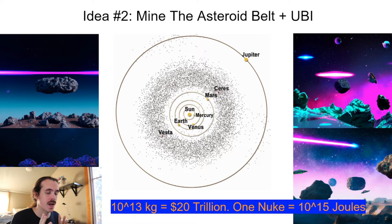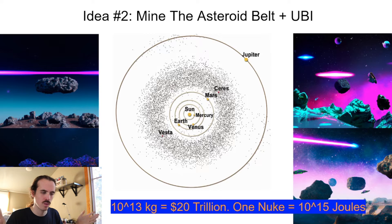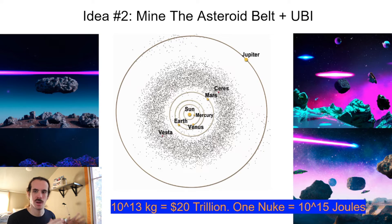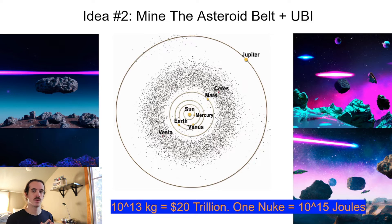We can also take idea number two in a different direction to end nuclear war. We get all countries with nukes and say: no one wants nuclear war because it causes mutually assured destruction. So rather than having nukes ready to blow up the planet, once we prove this asteroid idea works, we offer countries a deal: give away most of your nukes in exchange for a large share of the wealth for everyone. Everyone gets rich, we remove enough nukes to eliminate the possibility of nuclear catastrophe, and we've ended nuclear war and solved poverty in one go.